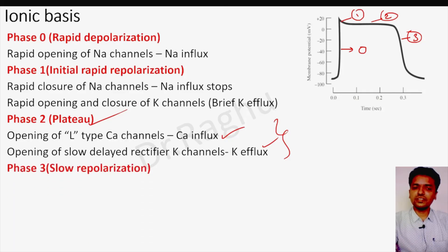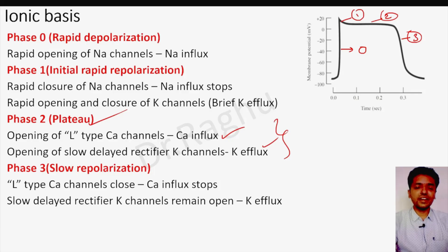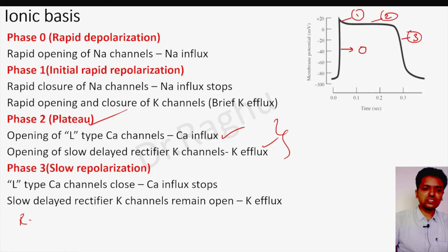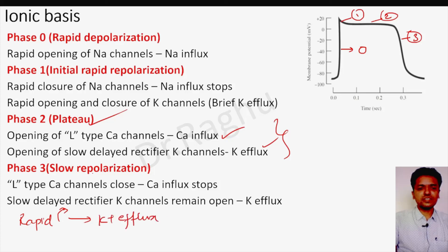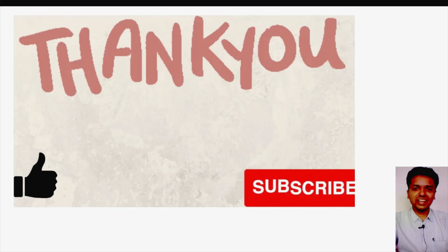Phase three is the repolarization phase. The L-type calcium channels that were open during phase two close, stopping calcium influx. The slow delayed rectifier potassium channels remain open, and opening of rapid delayed rectifier potassium channels causes profound efflux of potassium from the cell, resulting in the repolarization phase. Thank you for watching — please like, share, and subscribe to the channel.